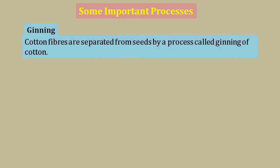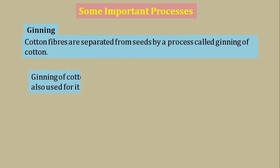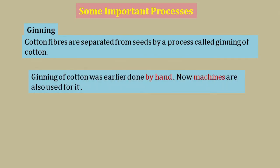We will now discuss some important processes used to make fabric. First is ginning. It is related to cotton. As we discussed, cotton fibers cover the seeds of cotton. To make use of cotton fiber, we need to separate the seeds from the fiber. This process of separating cotton fibers from the seeds is called ginning. In earlier times, ginning was done by hand; now ginning machines are used.